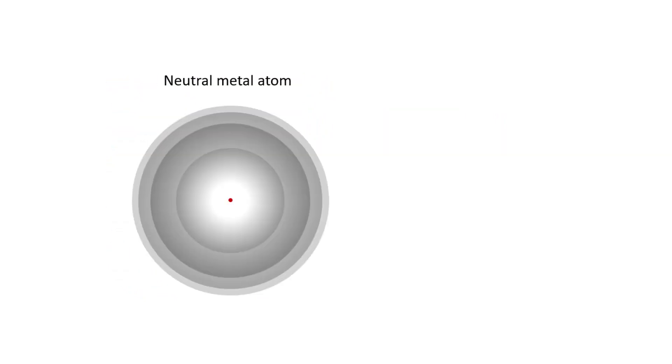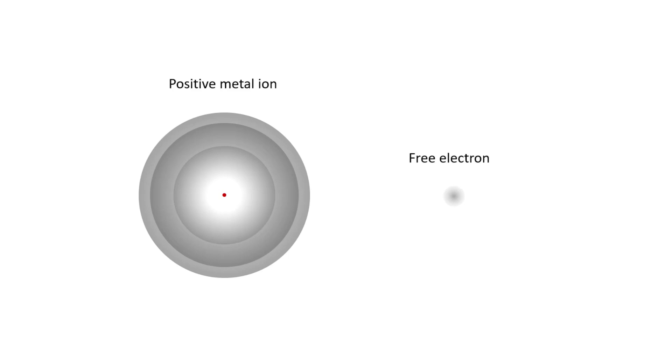In metals, one or two of the outermost electrons are only very weakly attracted to the nucleus of each metal atom. One or two electrons float away from their atom and wander around randomly.